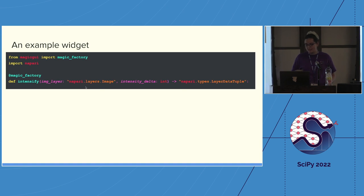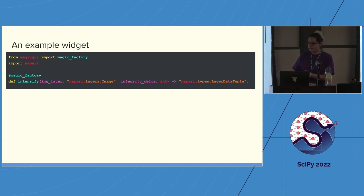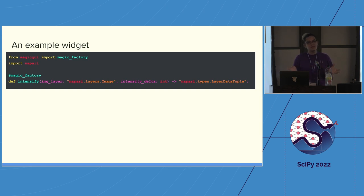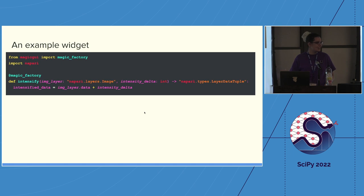Here's a real widget example. The function is `intensify`, taking `image_layer: napari.layers.Image` and `intensity_delta: int`, returning a `LayerDataTuple`. Because `image_layer` is annotated with `napari.layers.Image`, Magic GUI builds a dropdown populated with all image layers currently loaded in the viewer. The integer becomes a spin box. And because we're returning a `LayerDataTuple`, Napari will automatically add the result as a layer — you don't need to add it yourself.